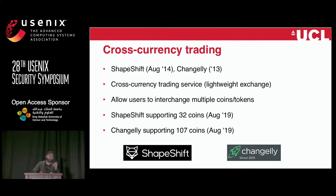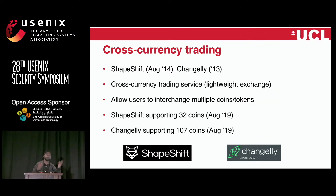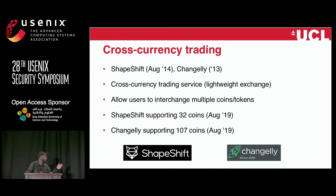There are a couple of exchanges which do this — two of which we'll speak about: ShapeShift and Changelly, focusing mainly on ShapeShift. These are exchanges which allow you to do cross-currency trades — like a lightweight exchange. They allow users to exchange multiple coins: Bitcoin for Ethereum, Ethereum for Bitcoin, and so on. Currently there are around 2,000 cryptocurrencies, but they combined support conversion of over 140.